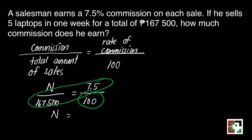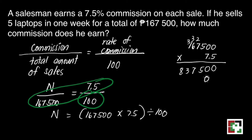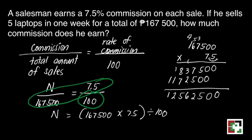How to get the value of N? We'll do cross multiplication. That's 167,500 times 7.5 divided by 100. We will get 1,256,250 but then we have to divide it by 100.